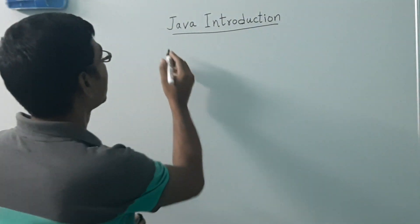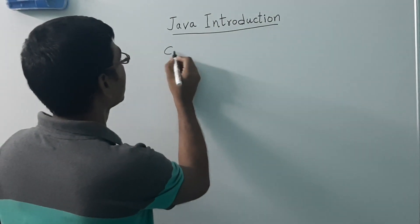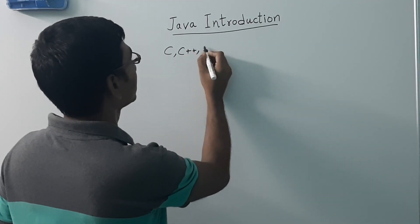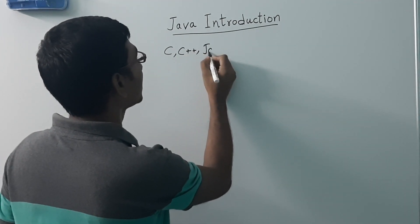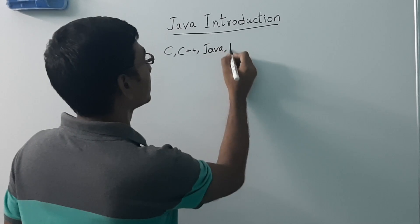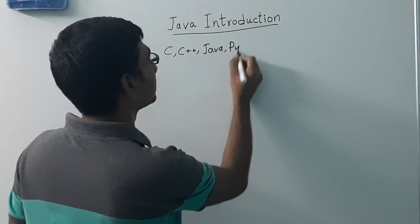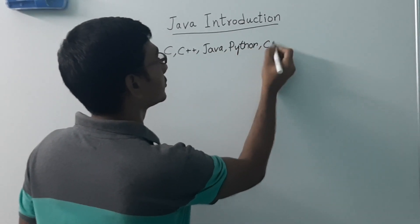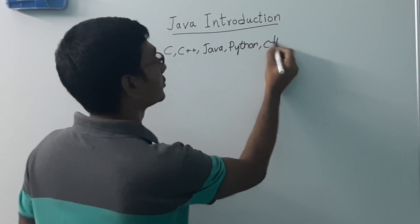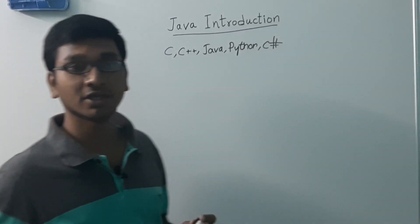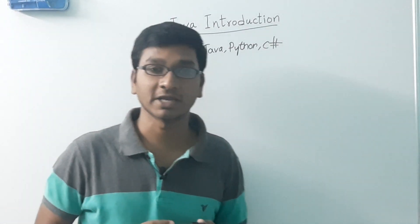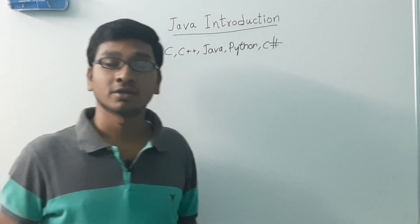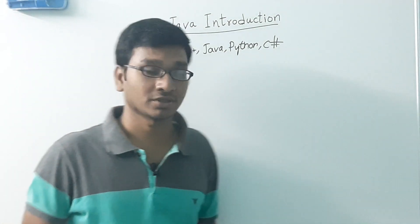So C, C++, Java, Python are some of the examples of programming languages. Now let us understand the features of programming languages.